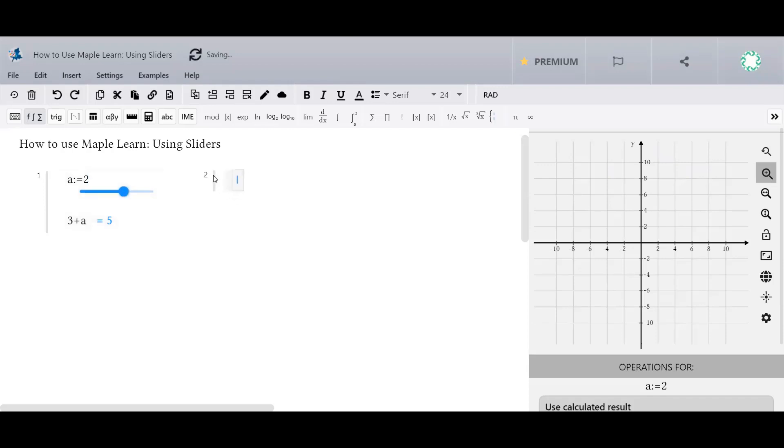You can also add a slider by starting with an expression or an equation, and then by going to the Quick Actions menu and by selecting Parametrize.